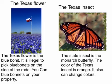The Texas Insect. The state insect is the Monarch Butterfly. The color of the Texas insect is orange. It also can change colors.